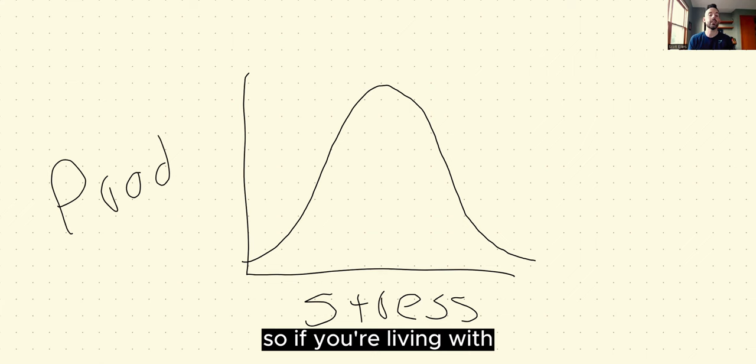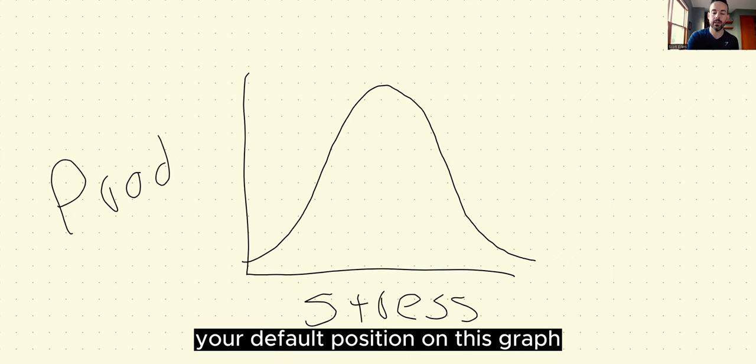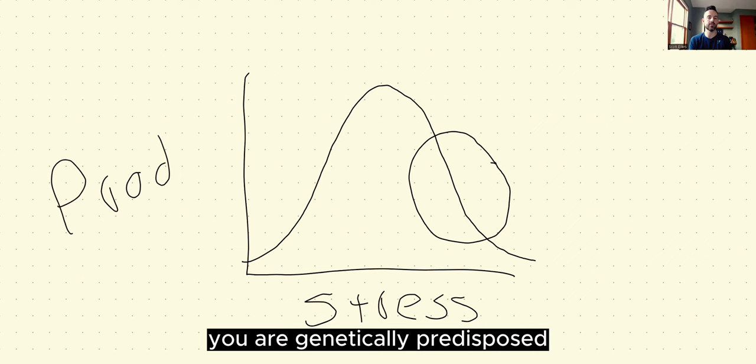So if you're living with any kind of chronic mental health condition, and especially if you have any kind of anxiety disorder at all, your default position on this graph is probably somewhere over here. You are genetically predisposed to care too much about things.